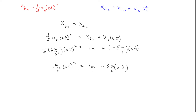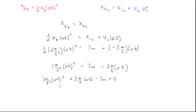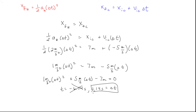We have a delta-t squared, a delta-t, and a constant — this is a quadratic equation. We move everything to one side: 1 meter per second squared times delta-t squared plus 5 meters per second times delta-t minus 7 meters equals 0. Solving the quadratic gives two solutions: minus 6.14 seconds and 1.14 seconds. We can't have negative time, so we discard minus 6.14 seconds. Therefore, the two players meet at delta-t equals 1.14 seconds.